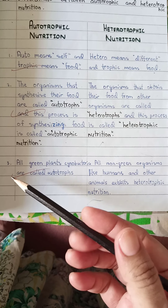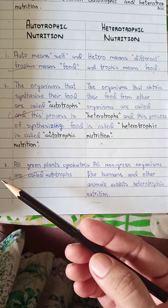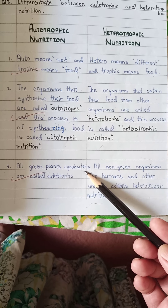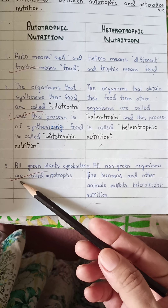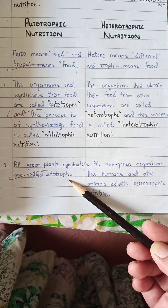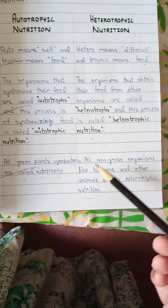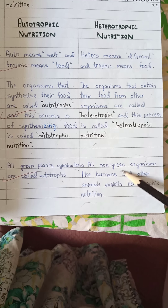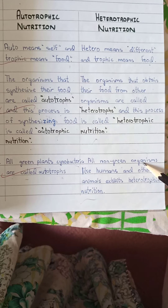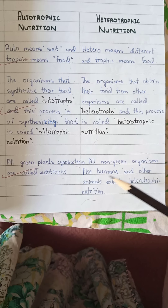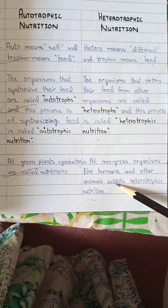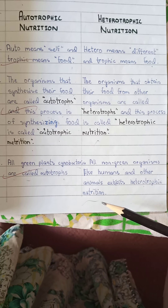Point number three of autotrophic nutrition: all green plants and cyanobacteria are called autotrophs. Point number three of heterotrophic nutrition: all non-green organisms like humans and other animals exhibit heterotrophic nutrition.